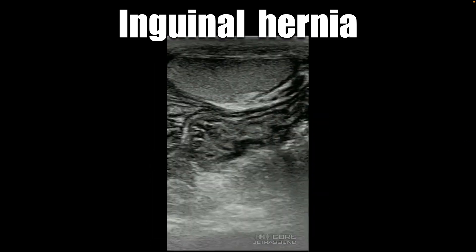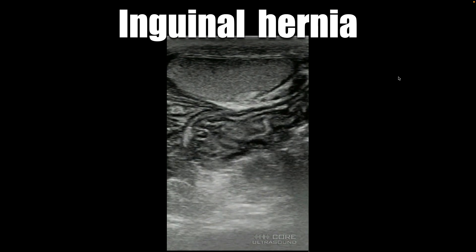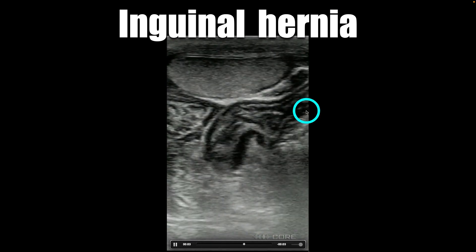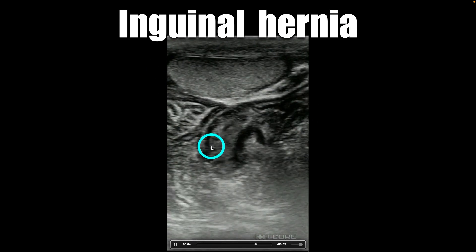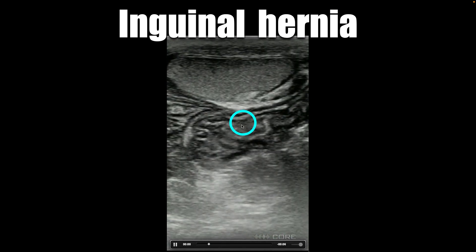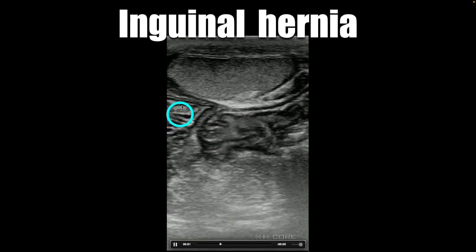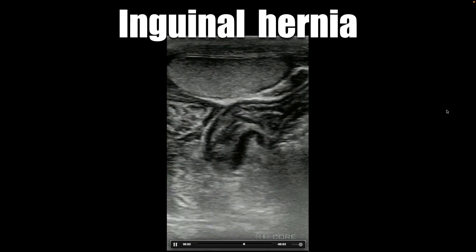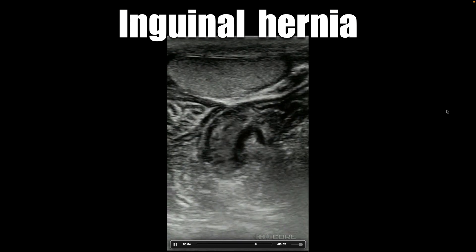Of course, you can also have the very classic, very far advanced hernia where you actually just see it in the scrotal sac. This right here is a testicle, and here you're seeing a bunch of peristalsing bowel just hanging out in the scrotum with this testicle. That also is an inguinal hernia.